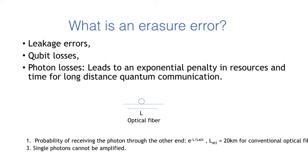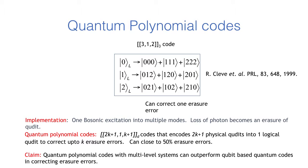Erasure errors take various forms such as leakage errors, qubit losses, or photon losses. Specifically for photon losses, they lead to an exponential penalty in terms of resources and time. Suppose we have an optical fiber of length L, the probability of receiving the photon through the other end of the fiber decreases exponentially with the length of the fiber.